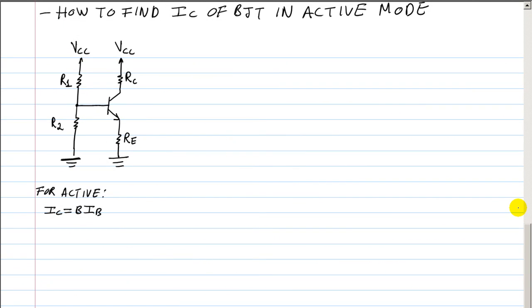In this video I'm going to show you how to find IC, that's the current through the collector of a BJT. I'm going to show you how to derive a formula for IC and you can use that formula whenever you have a BJT in active mode. This formula works with the four resistor bias network.